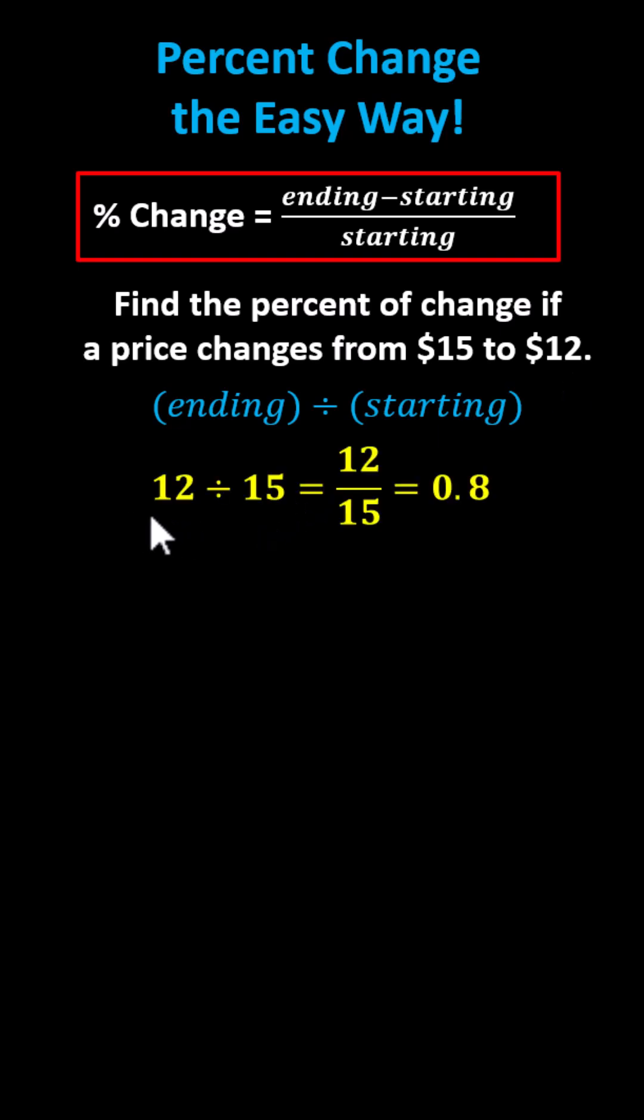This gives us 12 divided by 15. Remember, this is asking how many copies of 15 are in 12, which is less than 1, equal to 0.8. This indicates there are 0.8 copies of 15 in 12, or more importantly, 12 is 80% of 15.